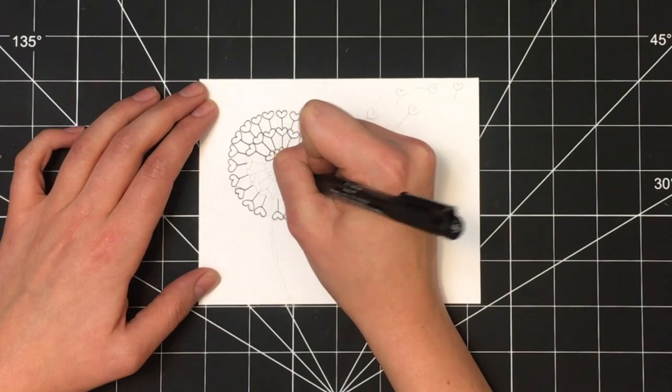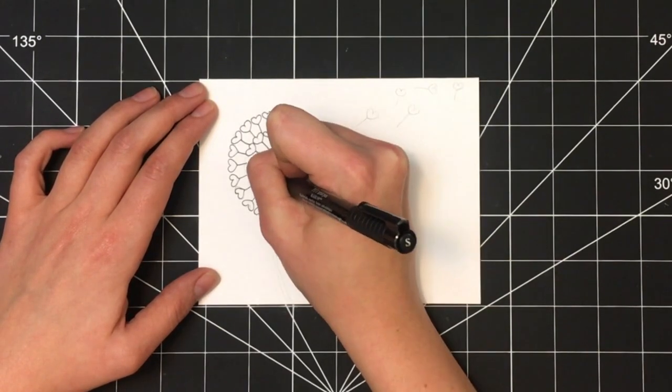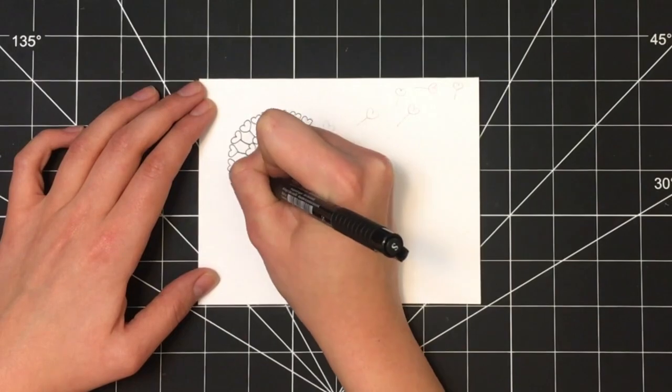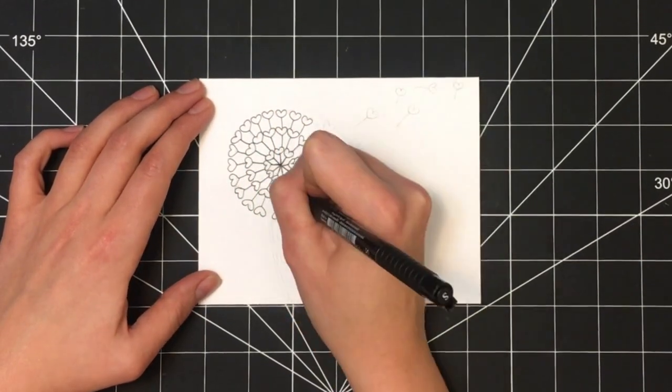Essentially this step is just outlining the design, so you're tracing over the pencil lines that you previously drew with your thin black pen.